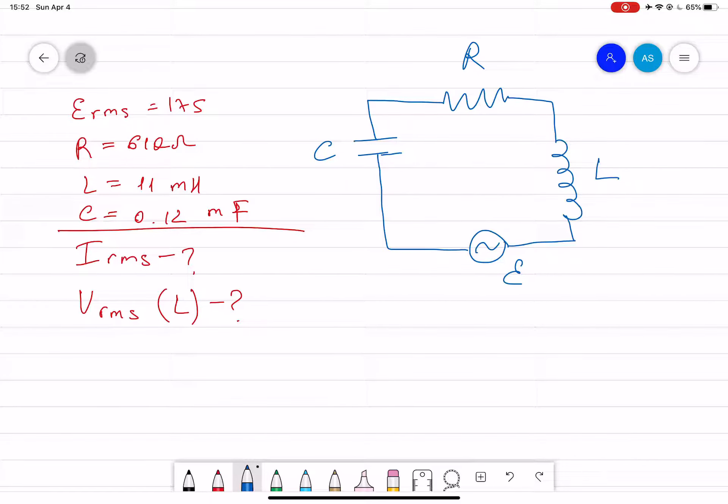Here we have an LC circuit as shown in the figure. We have to find the current RMS through the capacitor at the resonance frequency, and then we have to find the RMS voltage across the inductor at resonance frequency.